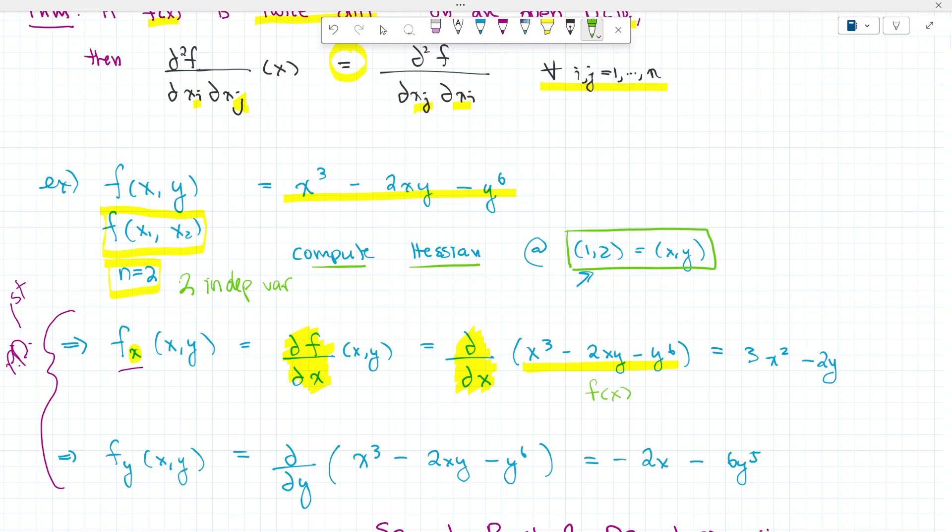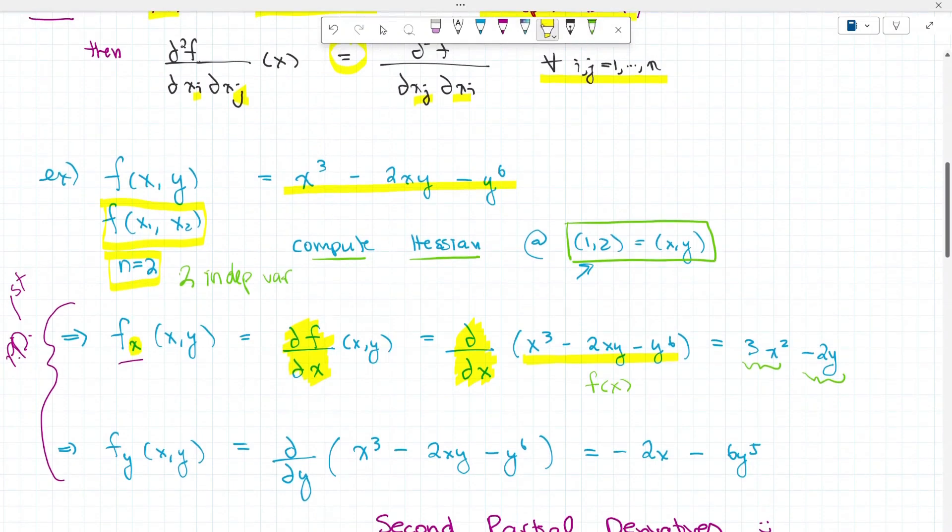We're keeping y as a constant and treating x as our independent variable. The first term here is found by power rule, same with the second one. This is a pretty simple, almost polynomial type case where we can take the derivative of each term individually because they're separated by subtraction. So we end up with 3x² - 2y. Similarly, we're going to do the same with y. Taking the partial derivative of f with respect to y of f(x,y) gives us -2x - 6y⁵.